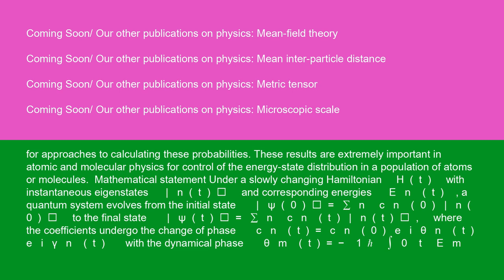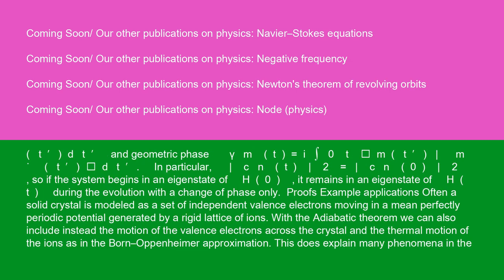Mathematical statement: under a slowly changing Hamiltonian H(t), with instantaneous eigenstates |n,t⟩ and corresponding energies E_n(t), a quantum system evolves from the initial state |psi(0)⟩ = Σ_n c_n(0)|n,0⟩ to the final state |psi(t)⟩ = Σ_n c_n(t)|n,t⟩, where the coefficients undergo a change of phase: c_n(t) = c_n(0) * e^{i*theta_n(t)} * e^{i*gamma_n(t)}, with the dynamical phase theta_n(t) = −(1/ℏ) integral from 0 to t of E_n(t') dt'. In particular, |c_n(t)|² = |c_n(0)|². So if the system begins in an eigenstate of H(0), it remains in an eigenstate of H(t) during the evolution with a change of phase only.